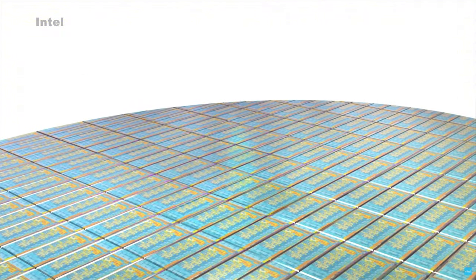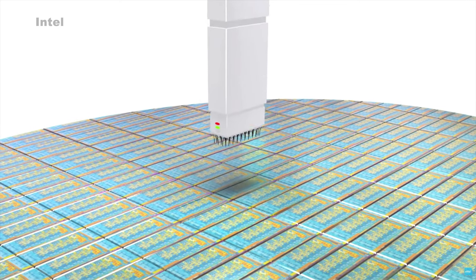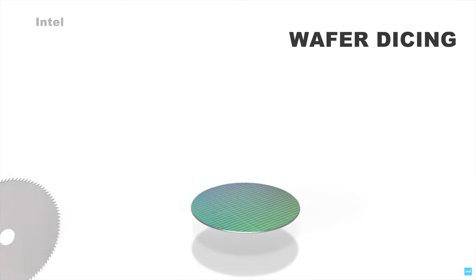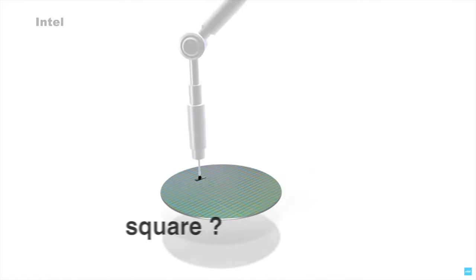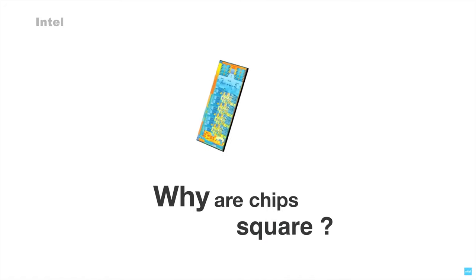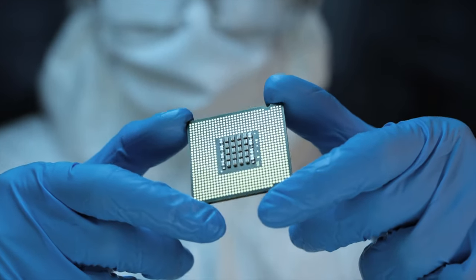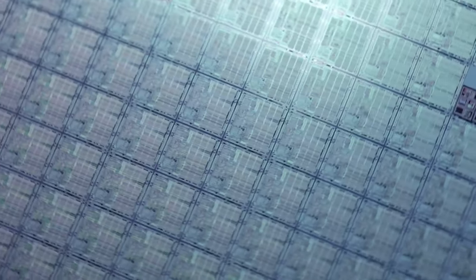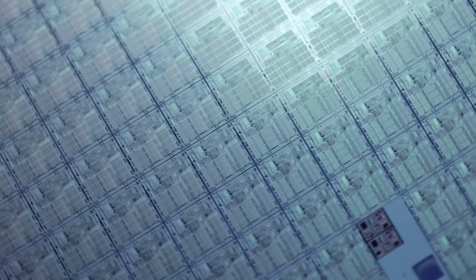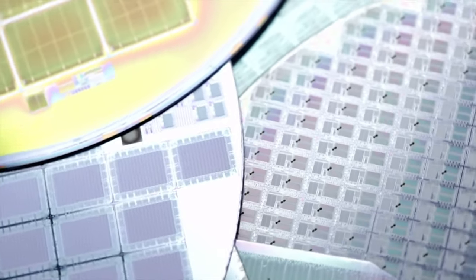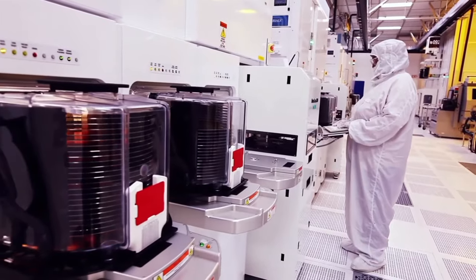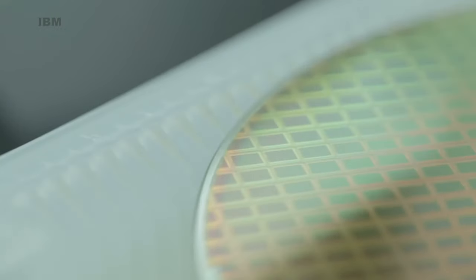After hundreds of fabrication steps are completed, the baby chips are built on the surface of the wafers. Each wafer is then diced into thousands of smaller square chips. If the wafer is round, why are chips square? The square shape is easy to cut and minimizes waste, giving us a greater number of chips per wafer. More chips per wafer means more profitability and lower cost.